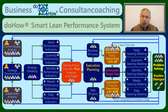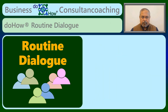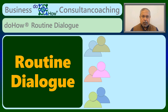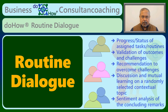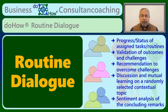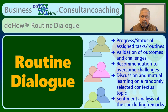Routine dialogue, the most important element of DoHow, is conducted between two people — the superior typically being a listener and the subordinate the speaker — with an optional observer. The progress and status of the assigned tasks and routines is discussed, with both outcomes and challenges validated and recommendations provided for overcoming the challenges. Additionally, a randomly selected contextual topic is used for mutual learning, with an AI-based sentiment analysis for the concluding remarks.